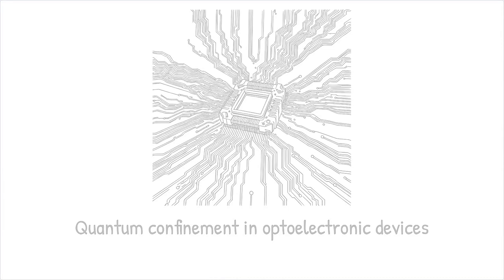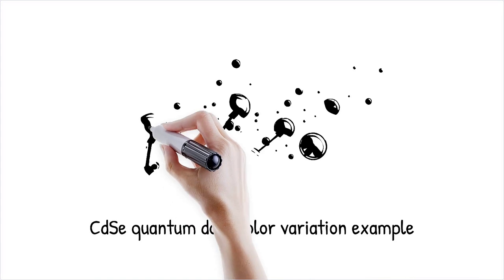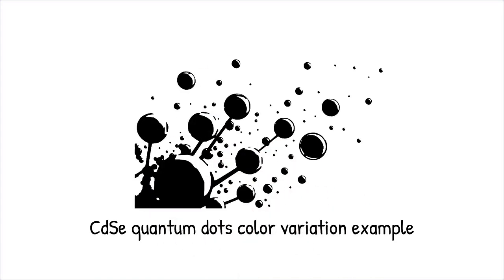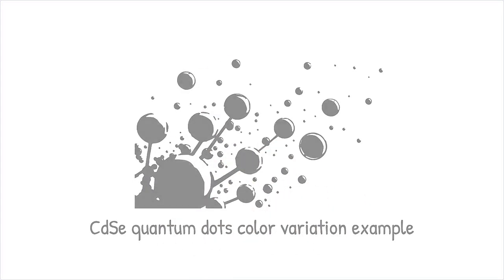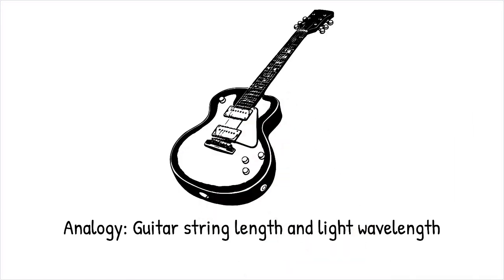Cadmium selenide, CdSe quantum dots, exhibit color variation from blue to red depending on their size, which is used in high-resolution biological labeling. It's like changing the length of a guitar string. Shorter strings produce higher-pitched sounds, just as smaller quantum dots emit shorter wavelength light.